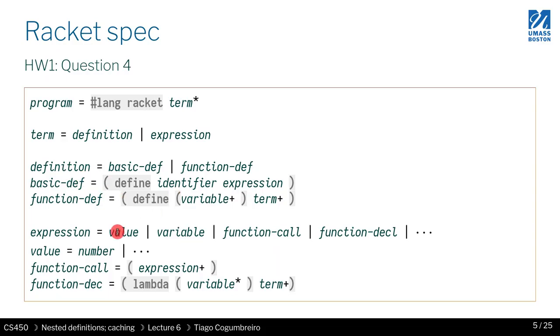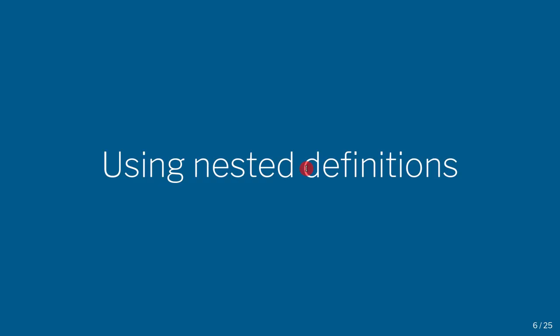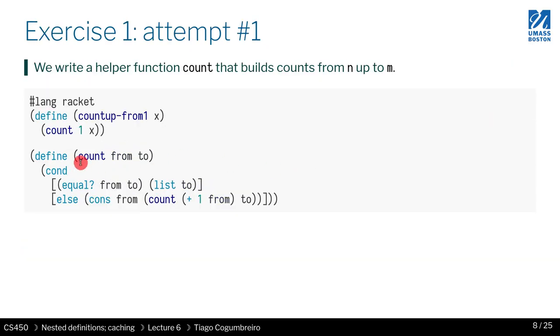And actually, I have a little slide here. So as you can see, inside function definition and also inside function declaration, there are terms. It's either a definition or an expression. That means that whenever we have a function, we can have nested definitions. So a very easy way of hiding count is to hide it inside the body of count up from one.